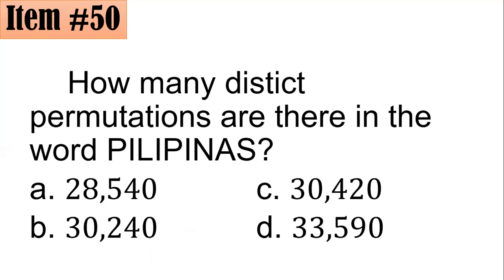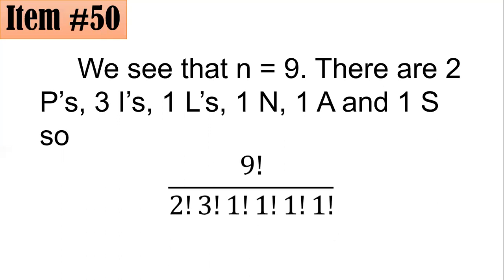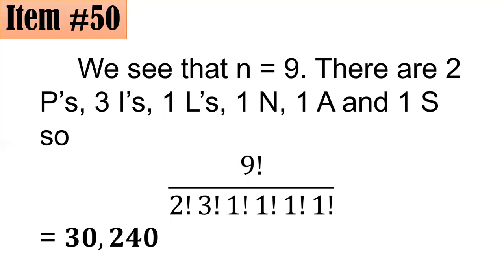Notice that certain letters in Filipinas are repeated: there are two P's and three I's, and the rest appear only once. There are 9 letters total. Using the formula for permutations with repeated elements, we compute 9 factorial divided by (2 factorial times 3 factorial), since the 1 factorials for the remaining letters don't change the result. Using a calculator gives 30,240 distinct permutations.